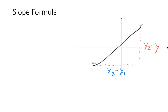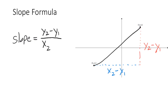So now if we want to put together our formula for the slope, it's a fraction. The change in y is y2 minus y1, and the change in x is x2 minus x1. And there we have it — now we have a general formula that we can use on any two points to calculate the slope between them.